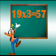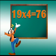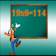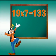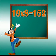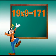19 3s are 57, 19 4s are 76, 19 5s are 95, 19 6s are 114, 19 7s are 133, 19 8s are 152, 19 9s are 171.